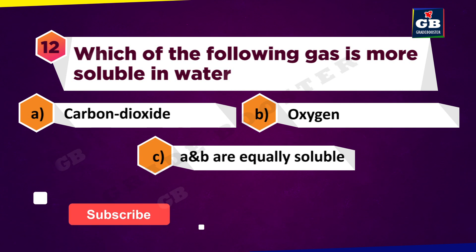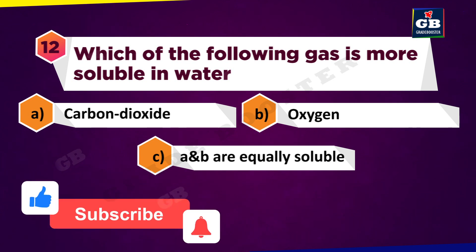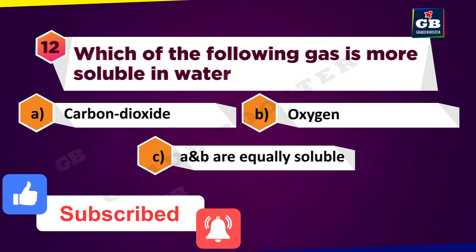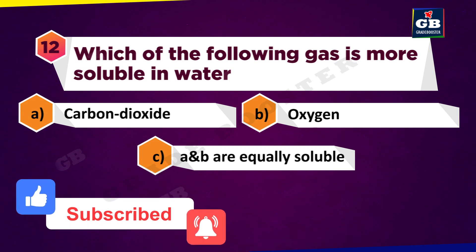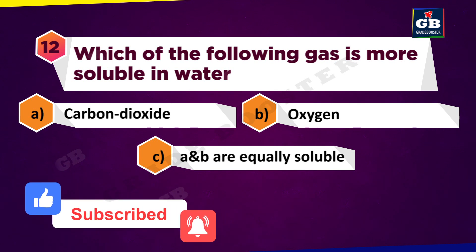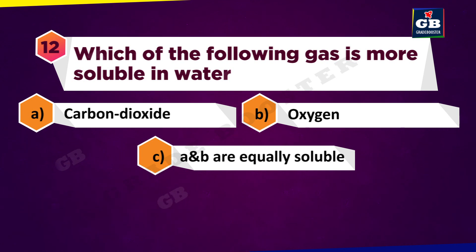Which of the following gases is more soluble in water? A. Carbon dioxide, B. Oxygen, C. A and B are equally soluble.